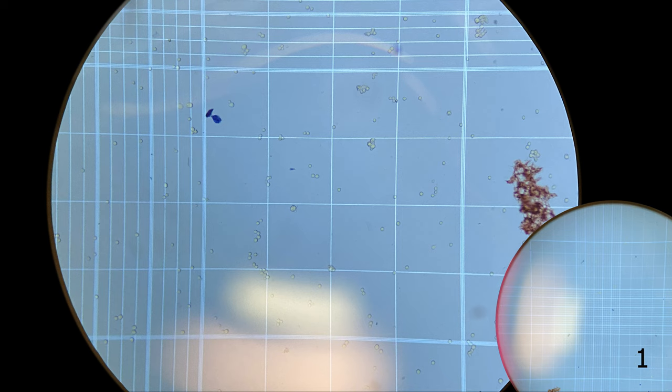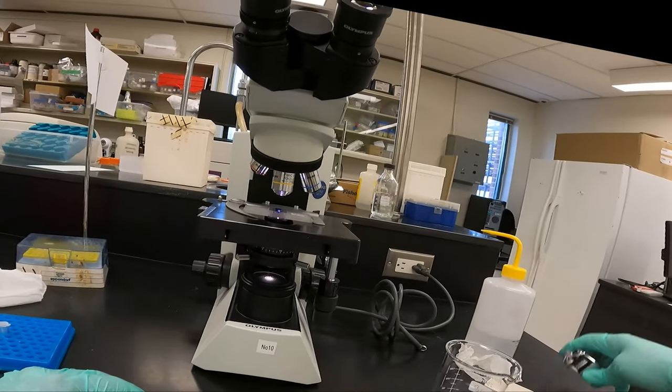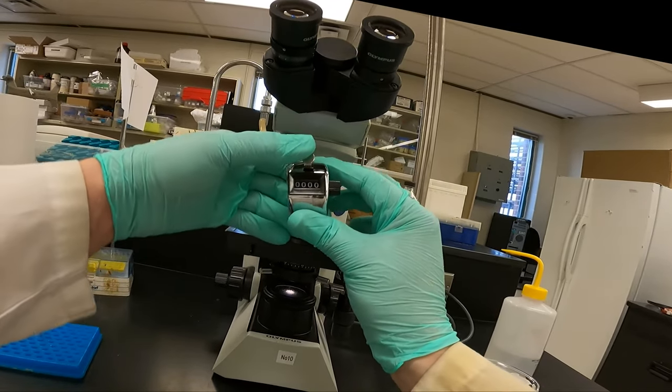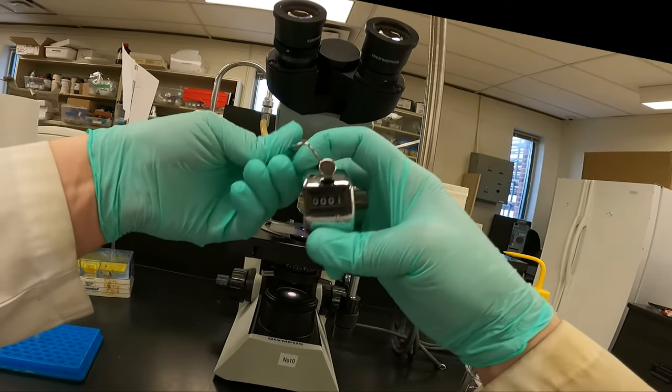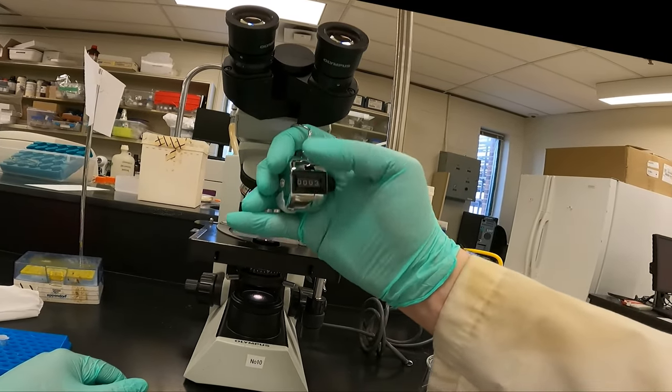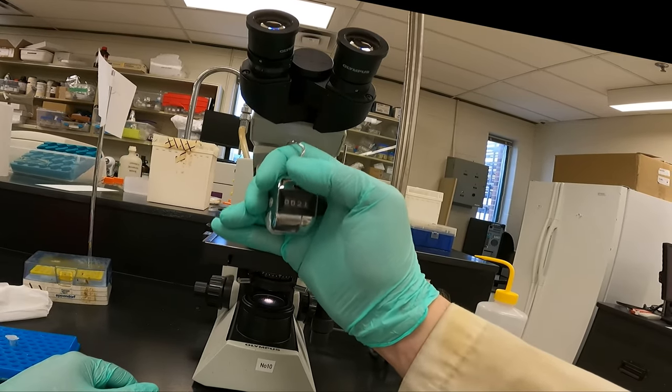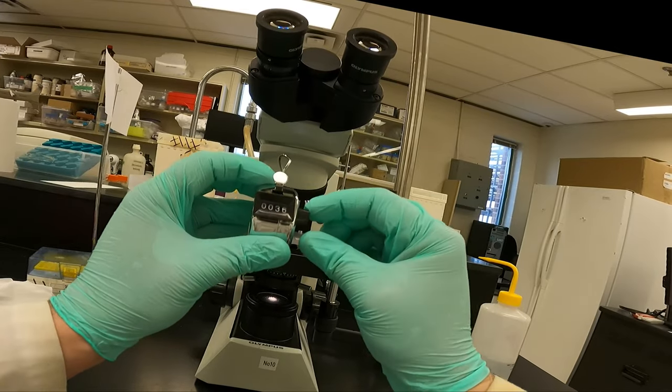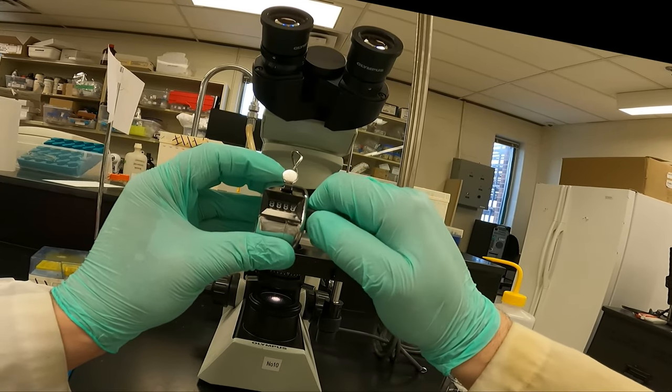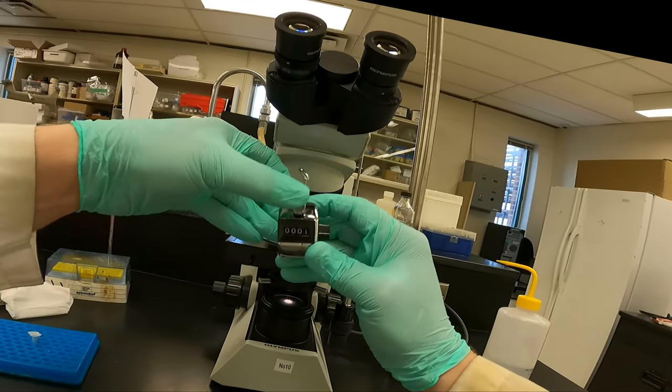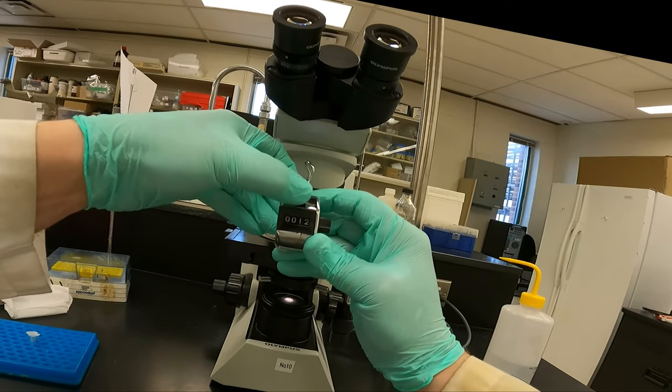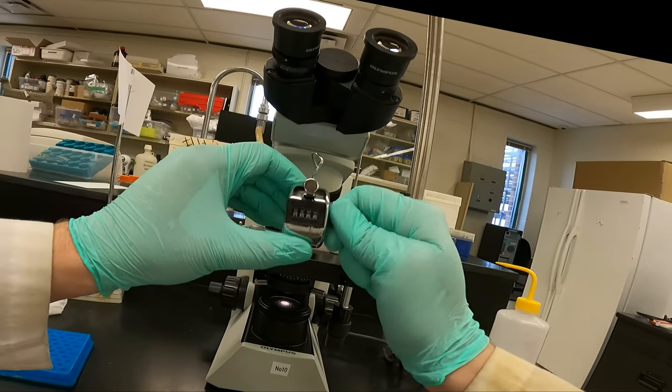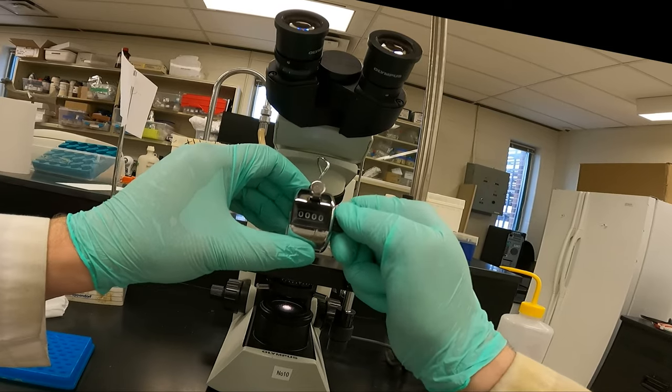This is what the tally counter looks like and how it works. You can see, we press this button, and every time we press it, it goes up by one. So we can quickly count our cells, read off, record our data, and then reset it by turning this knob on the side. Again, press the button every time you see a cell, and then at the end, reset it. Like so.